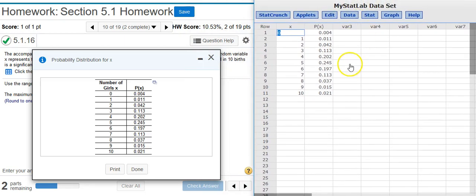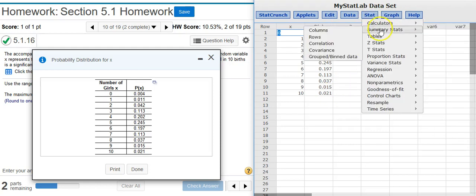So, we need to get the mean and the standard deviation for this distribution. Now, if I go directly into Stat, Summary Stats, and then Grouped Bin Data, I'm going to find that I'm going to get frustrated because this option requires us to have integer values.